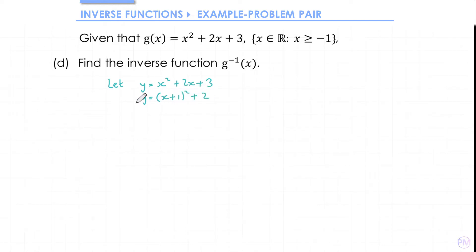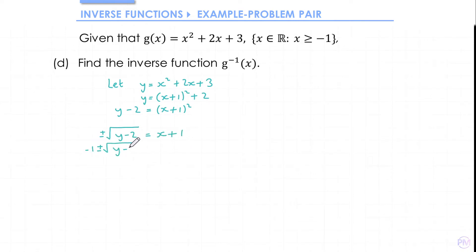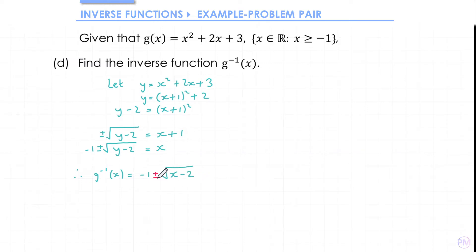From here we can rearrange to make x the subject. Now that we've made x the subject we can write down our inverse function. However, at this point we need to be really careful about how we deal with this plus or minus. It's written in red at the moment because this isn't actually the inverse function — if we put a value in for x we're going to get two outputs: a plus root(x - 2) and a minus root(x - 2), which means we wouldn't actually have a function.